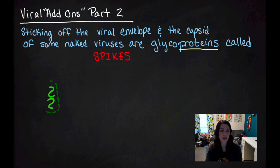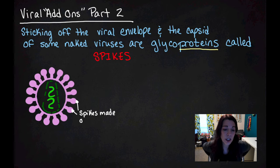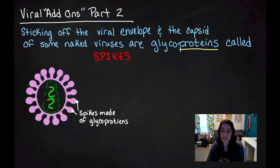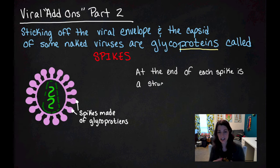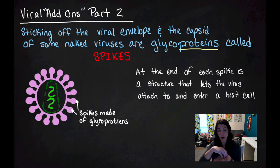So let's draw a virus. Those spikes are made of glycoproteins. And at the end of each of those glycoproteins, at the ends of each of those spikes, there's a structure that lets the virus attach to and enter the host cell.